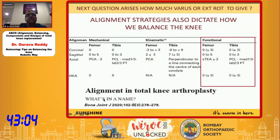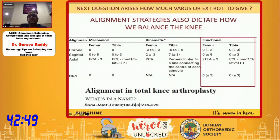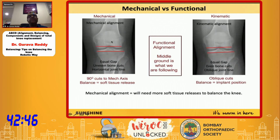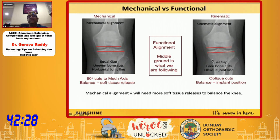Without debating which alignment is better, robotics is the best way to achieve functional alignment because it can quantify even three or four degree differences. In mechanical alignment, a 90-degree cut to the mechanical axis is balanced by soft tissue release — equal gaps, uneven bone cuts, horizontal joint line. In kinematic alignment, equal gaps come from even bone cuts with an oblique joint line. Functional alignment is a middle ground: balance is achieved by implant position, minimizing the need for soft tissue release.